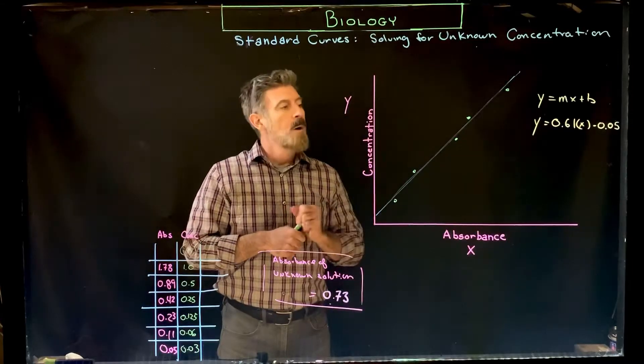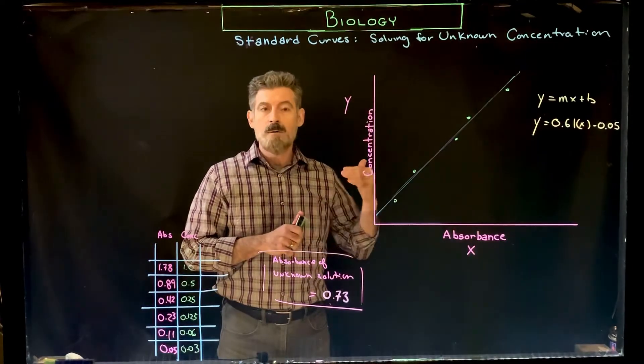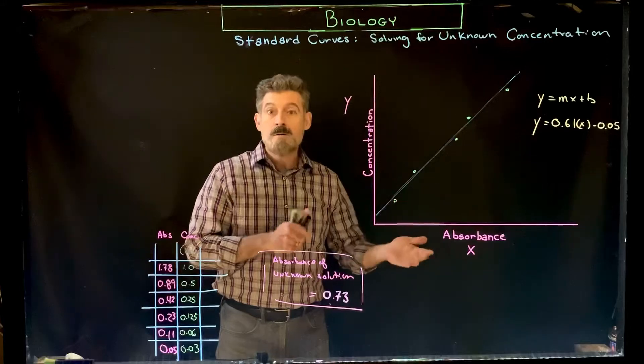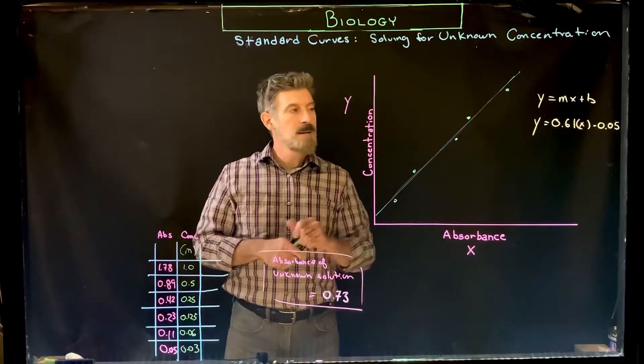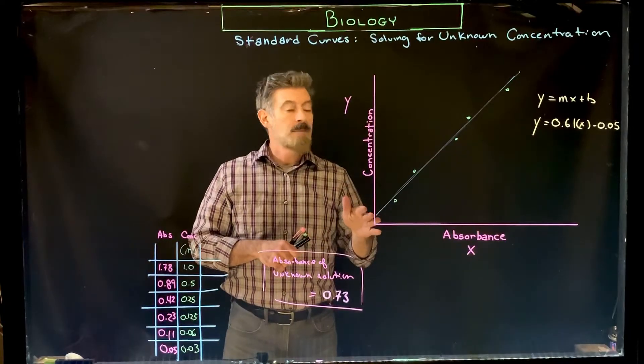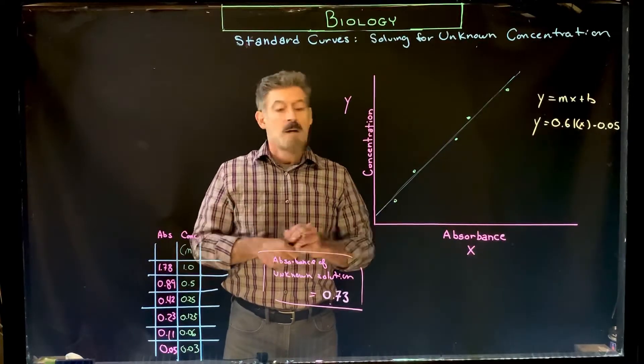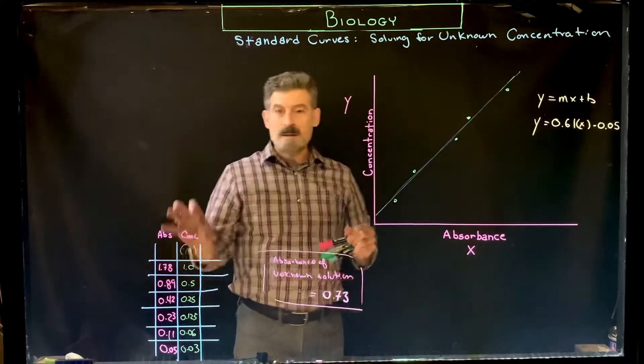With dopachrome, you're going to have to solve for unknown concentration so you could use that to do another calculation to find rates of reaction. It's a lot of calculating, and if you don't know how to do it, you're really going to be stuck.